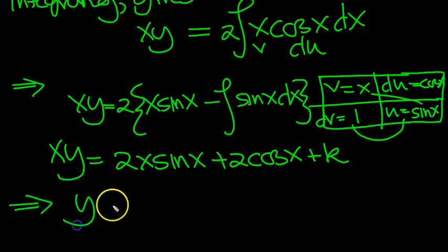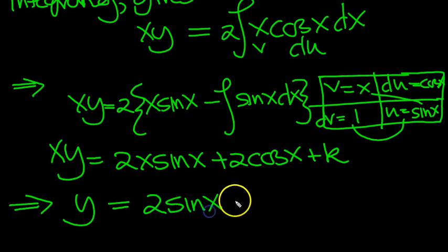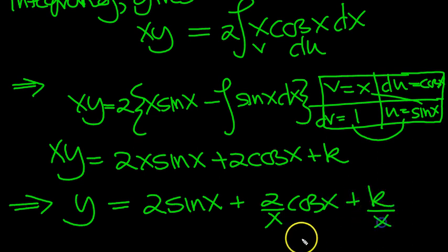Now divide by x all the way through. This will be just 2 sin(x) here. This will be 2/x cos(x). And this will be plus k/x.